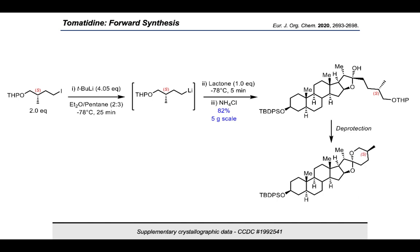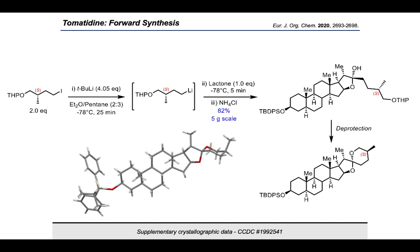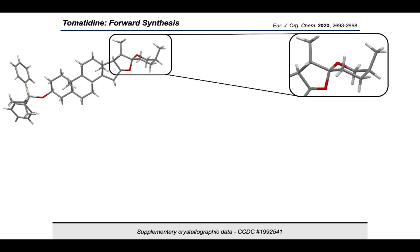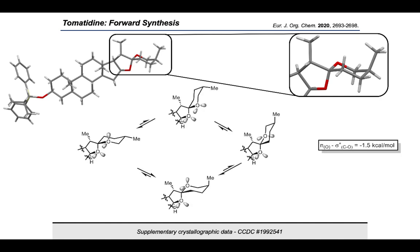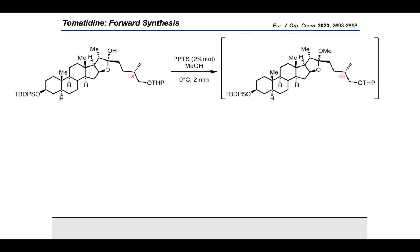Instead, we observed the spiroketal product, generated by the trapping of the primary alcohol as soon as it was deprotected by the oxonium from the hemiketal moiety. A crystal of this product was obtained to confirm its structure. Surprisingly, the spiroketalization occurred from behind the molecule, placing the S C25 methyl in an axial position instead of the more thermodynamically preferred equatorial position. Upon further investigation, we concluded that anomeric effects were responsible for this unexpected result — the conformation with two anomeric effects places the methyl in the axial position.